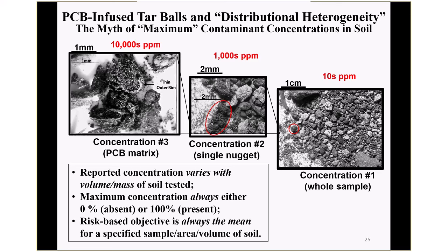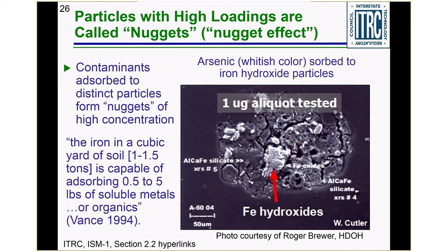This is why we always want to find out the true mean concentration of a contaminant for a specified sample area or volume of soil. Even at the arsenic site, if you zoom in close enough with an electron microprobe, you see little nuggets of iron hydroxides coated with arsenic. If you tested the soil you'd get one number; if you tested one iron nugget you'd get another; if you just tested the coating on the iron hydroxides, you'd get 100% arsenic. Same concept.